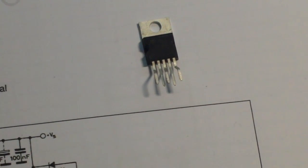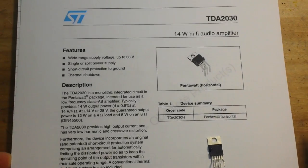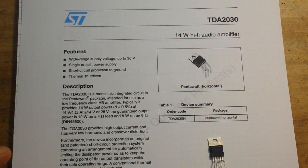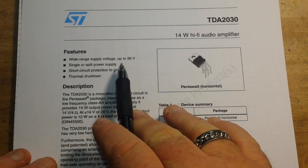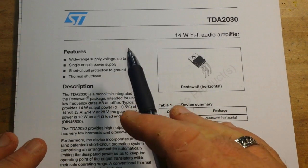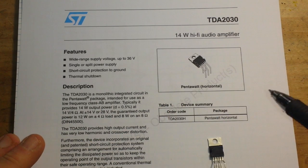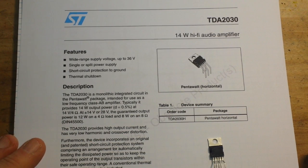Now what we're talking about is this little guy here, the TDA 2030 from ST.com. It has a wide voltage supply up to 36 volts, but you don't have to go that high. It will operate as low as 6 volts, but 12 volts is a good place to start. Single or split supply, that means...